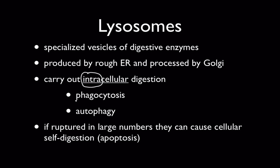A special type of endocytosis is phagocytosis, or cellular eating. That's when a cell surrounds a food particle or a bacterium and forms a food vacuole, then fuses this food vacuole with lysosomes so that the digestive enzymes can interact with the food trapped inside the food vacuole and digest it.